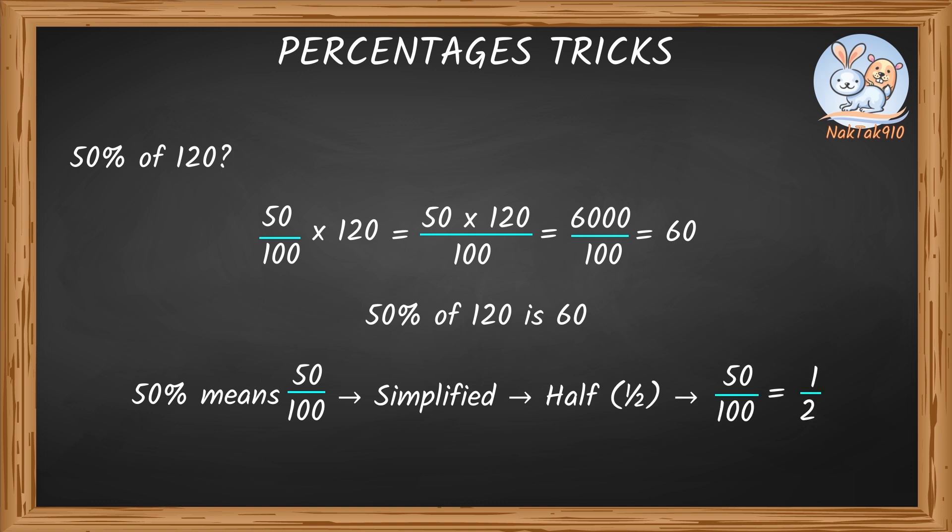So, to find 50% of any number, we need to just find half of the number. In this question, half of 120 is 60, which is the same answer which we got by calculating.